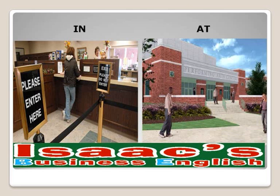Look at these images. Notice there is a person inside the bank — she is in the bank. And there is another person who is outside — she is at school. But many times you will hear: she is at the bank. This is what causes confusion. Why do they say 'she is at the bank' when she is inside the bank? Or in the other case, why do they say 'he is in school' when he is outside the school?